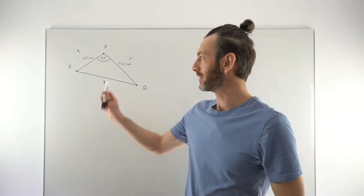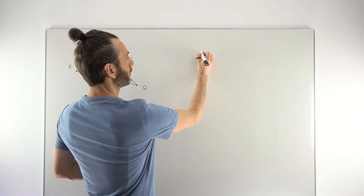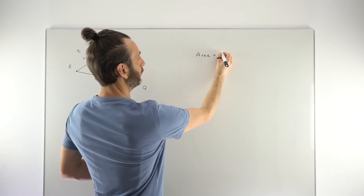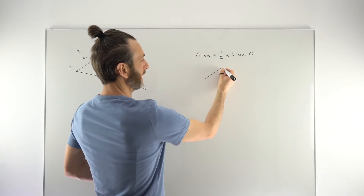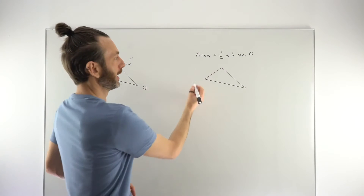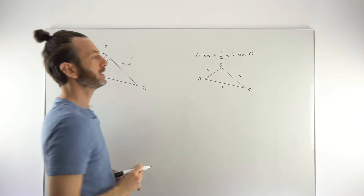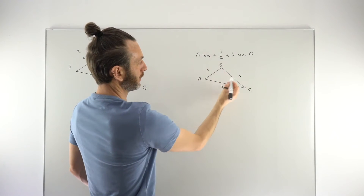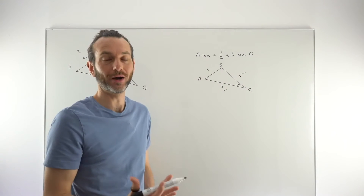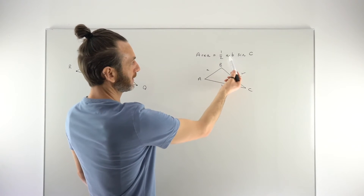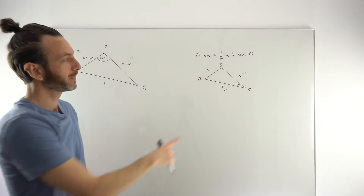In this question we've been asked to find the area of triangle PQR. It's a non-right triangle, which means we use the general triangle formula from the formula sheet: area = ½AB sin C. What this really says is that you need two side lengths with the angle in between them. It doesn't matter if the letters are A, B, C or any other letters — take two side lengths with the included angle and multiply them together with ½. That's exactly what we've got in our question: two side lengths with the angle in between.